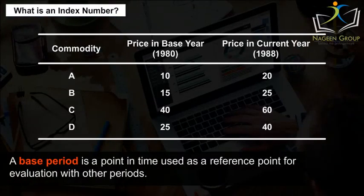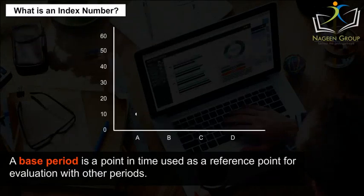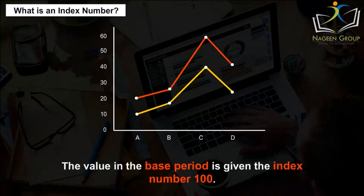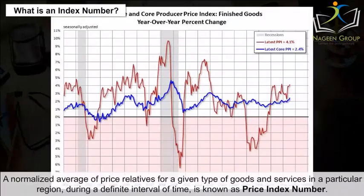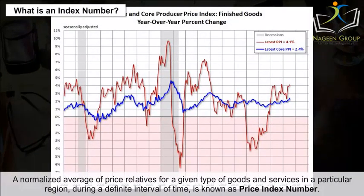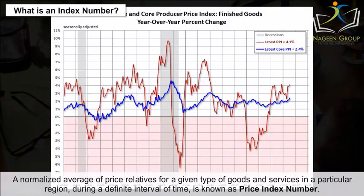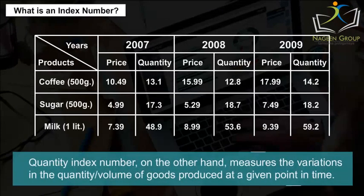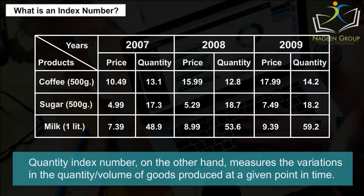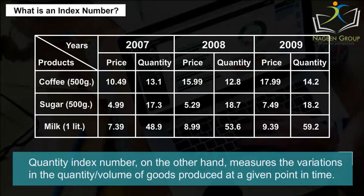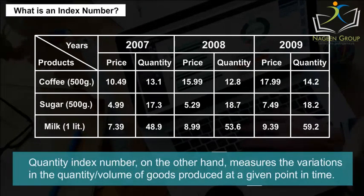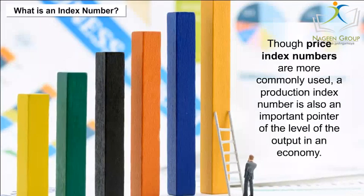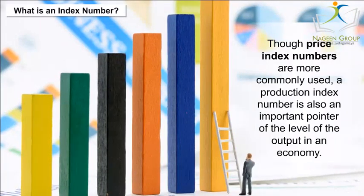A base period is a point in time used as a reference point for evaluation with other periods. The value in the base period is given the index number 100. A normalized average of price relatives for a given type of goods and services in a particular region during a definite interval of time is known as a price index number. A quantity index number measures the variations in the quantity or volume of goods produced at a given point in time. Though price index numbers are more commonly used, a production index number is also an important pointer of the level of output in an economy.